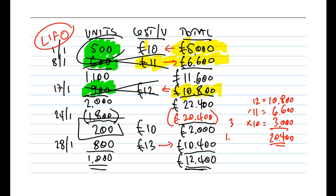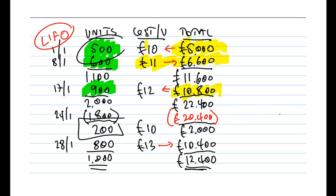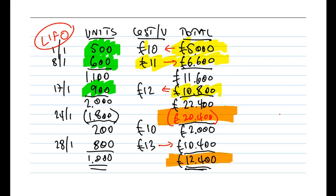To summarize the LIFO position: the value of the issue on the 24th is £20,400, and the closing inventory value is £12,400. Both figures differ slightly from what we got under FIFO.